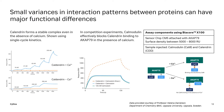AKAp79 was immobilized on sensor chip CM5 at surface densities of 5000 to 8000 RU. The interaction between calendrin and AKAp79 was somewhat complicated to address since no suitable regeneration condition could be established with a calcium-free buffer. Therefore, a single-cycle kinetics approach was chosen, as this type of assay does not necessarily require a regeneration step. From the resulting sensorgrams from the single-cycle kinetics experiment, you can see that calendrin forms a stable complex with AKAp79 in the presence and absence of calcium. In competition experiments, calmodulin was found to effectively block calendrin binding to AKAp79 in the presence of calcium.